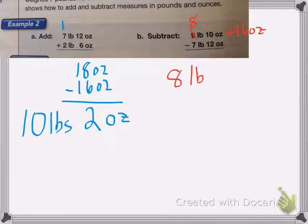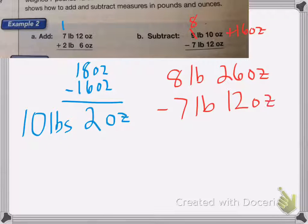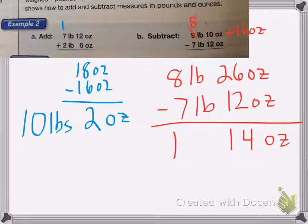I now have 8 pounds, 26 ounces, because I added the 16 ounces, minus 7 pounds, 12 ounces. So 26 minus 12. 6 minus 2 is 4. 2 minus 1 is 1. So I'm left with 14 ounces, and then 8 minus 7 is 1. So I'm left with 1 pound, 14 ounces.